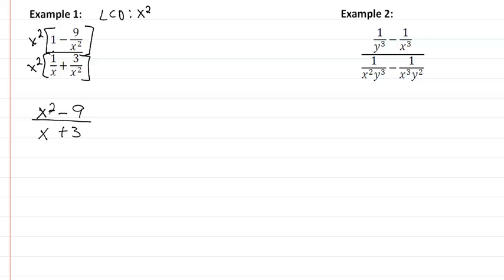Now we want to factor the top here, it's a difference of squares, so we're going to get x plus 3, x minus 3, all over x plus 3. Take out the common factor between top and bottom, and we're left with an answer of x minus 3.